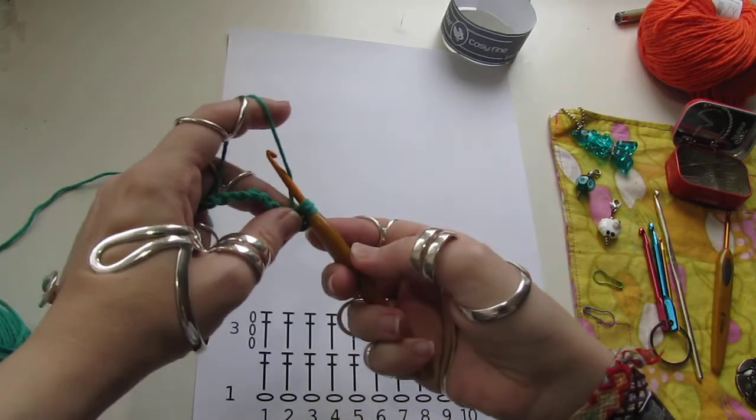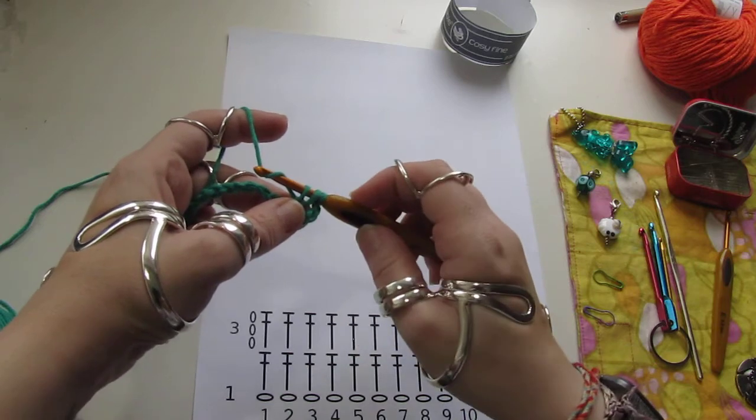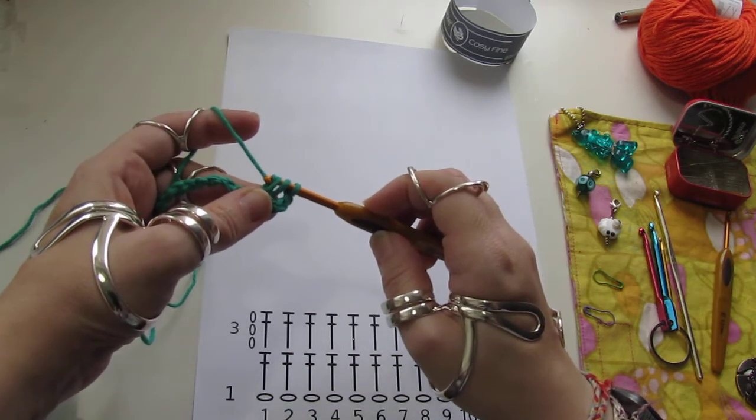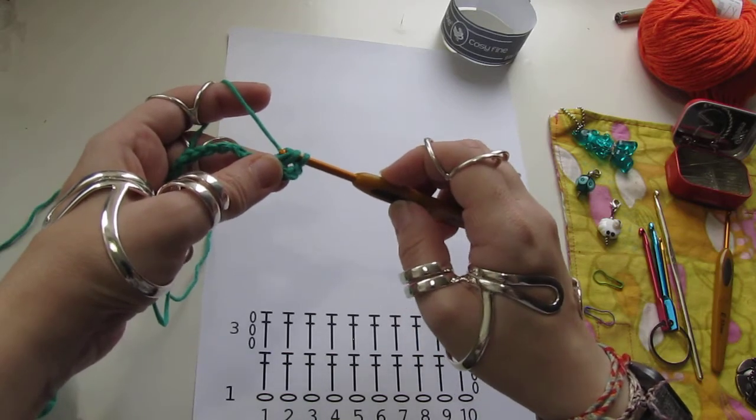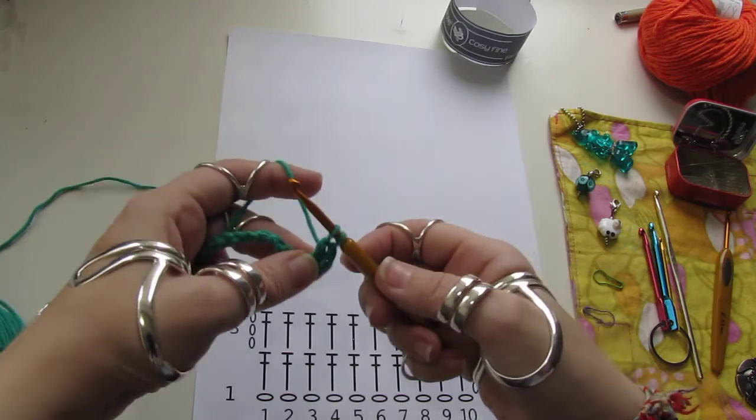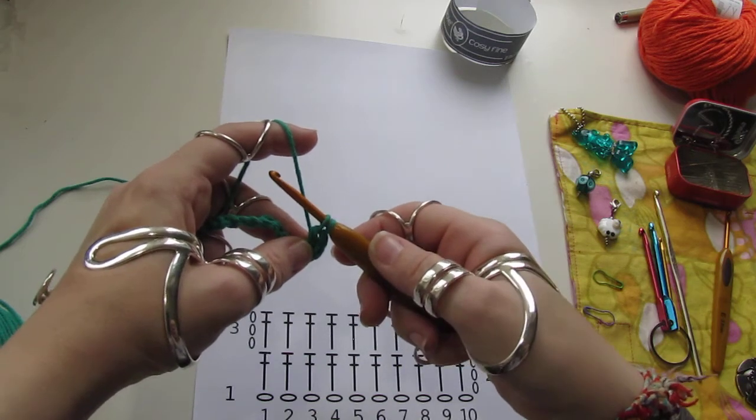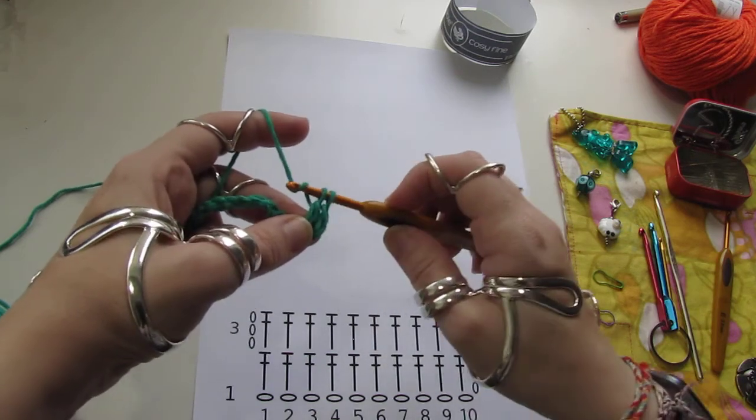Wrap the yarn around the hook and pull through one or two stitches on the hook. Again, wrap the yarn around the hook and pull through the two stitches.